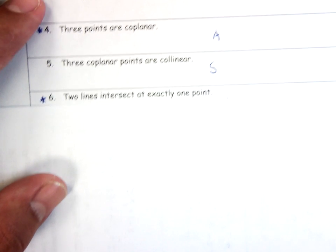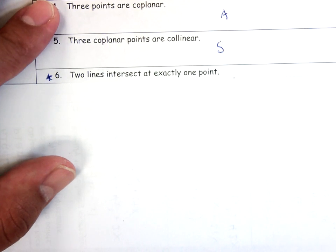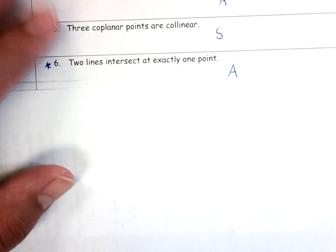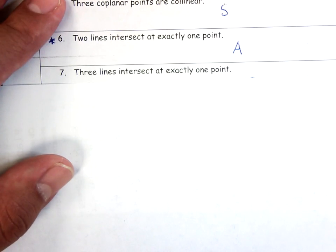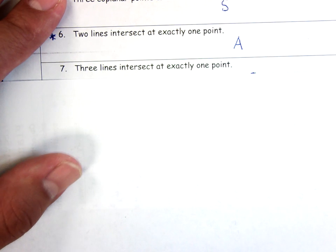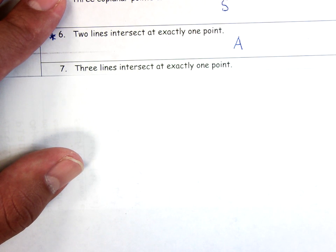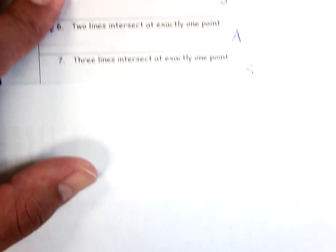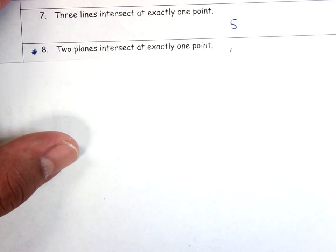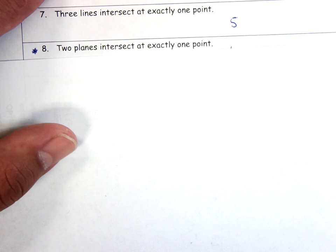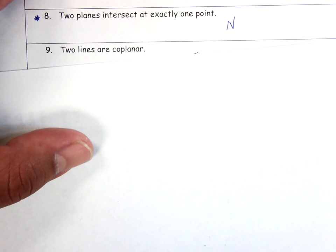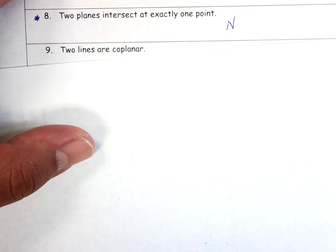Two lines intersect at exactly one point. Always. Put a little star by that. Three lines intersect at exactly one point. We can talk about this one in class. I don't really like the wording of this one. I'm going to put sometimes, see if you can justify a different answer in class. Two planes intersect at exactly one point. Put a little star by this one, and we're going to put never. That is never true. Two lines are coplanar. So if I have two lines, are they always in the same plane? That's going to be sometimes.